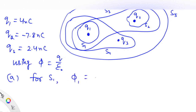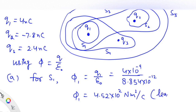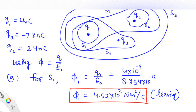the flux φ1 is given by the enclosed charge q1 divided by ε₀. q1 = 4 nanocoulombs = 4×10⁻⁹ C, and ε₀ = 8.854×10⁻¹² C²/N·m². So φ1 is calculated to be +4.52×10² N·m²/C. The positive sign means the flux is leaving the closed surface. This is the answer for the first part.